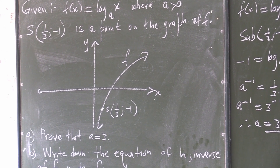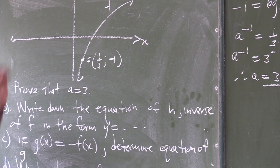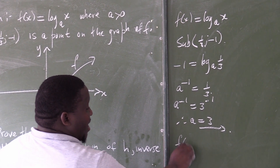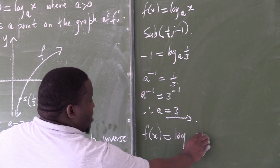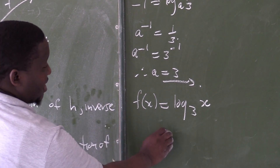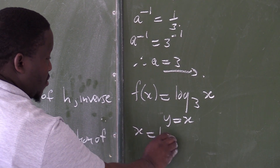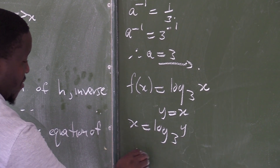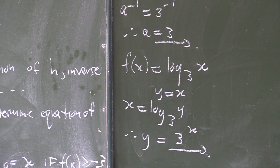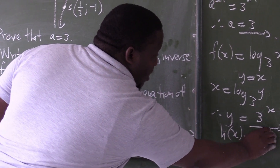Part B: write down the equation of h, the inverse of f. Now that we know a equals 3, our f of x is log base 3 of x. To find the inverse, we reflect along the line y equals x. So we swap x and y: x equals log base 3 of y, therefore y equals 3 to the power of x. So h of x equals 3 to the exponent x.